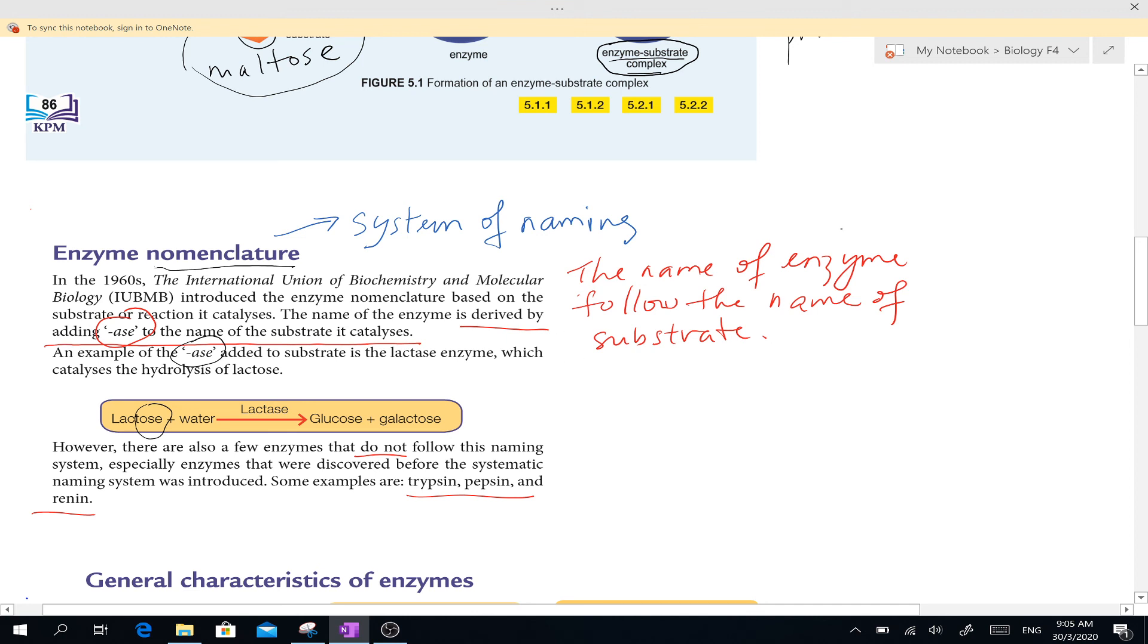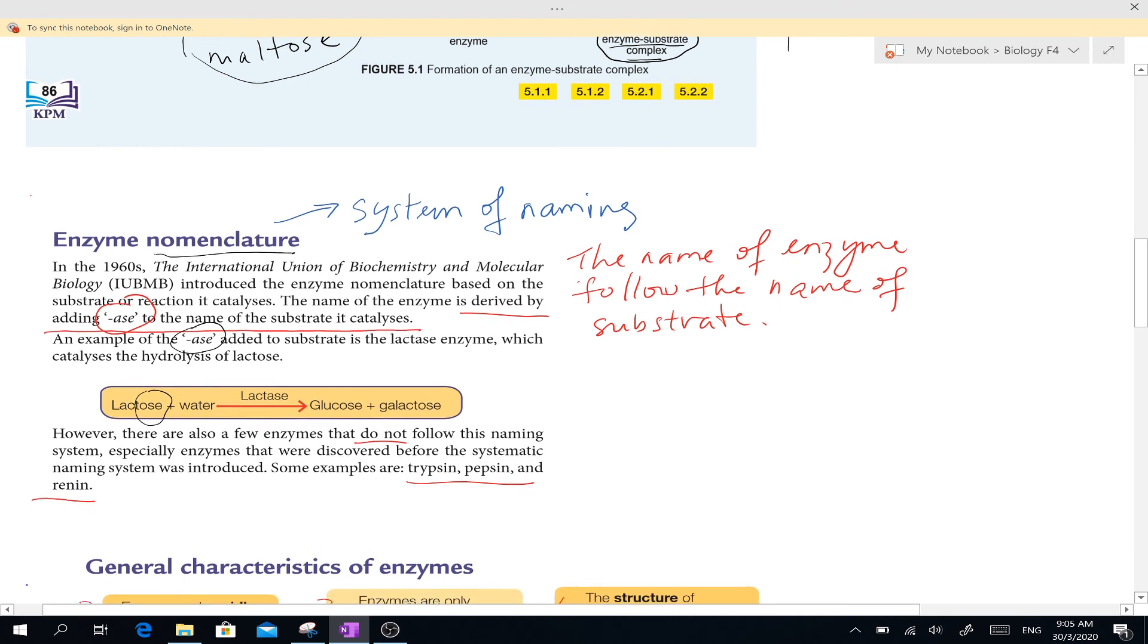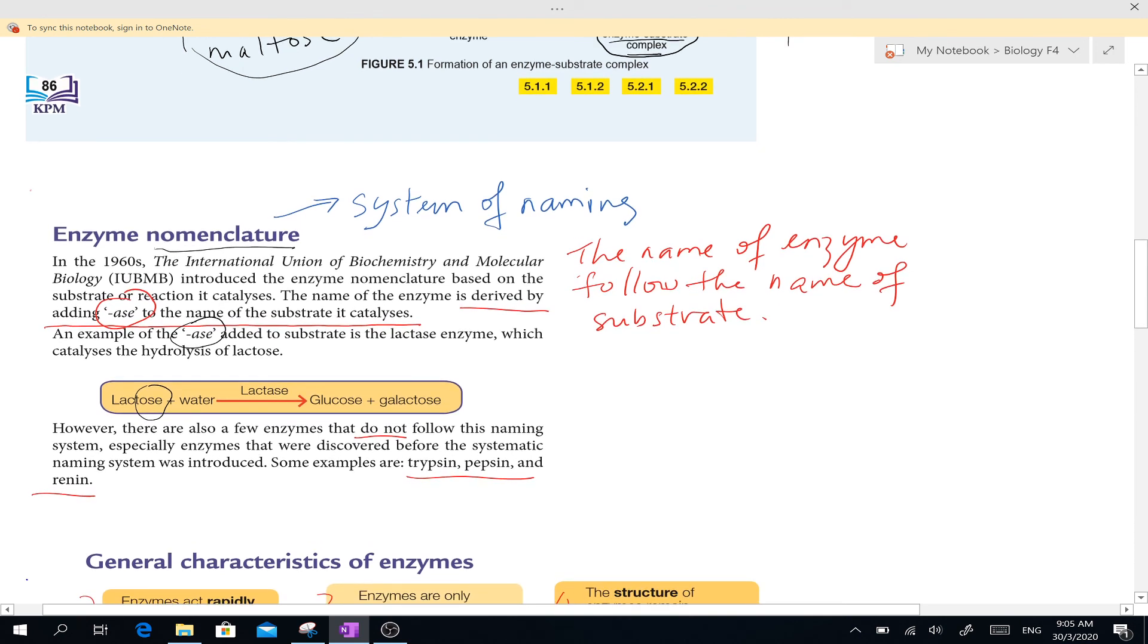But you also remember there are certain names of enzymes which do not follow this. For example, trypsin, pepsin and renin. Why they don't follow this? This is because these enzymes were discovered before they set the system. So in order not to confuse and change the name, they retain back the name trypsin enzyme and renin. So these names, they have the I-N behind here. So I-N name here also suggests that it could be an enzyme.